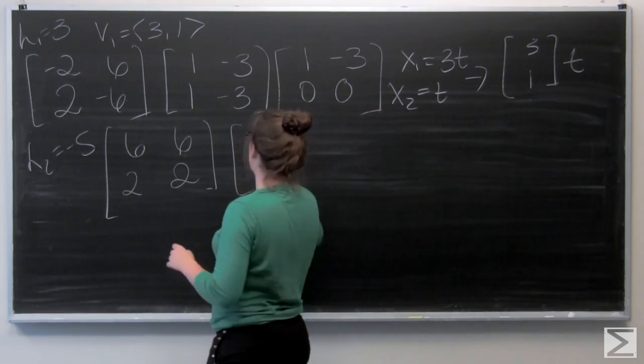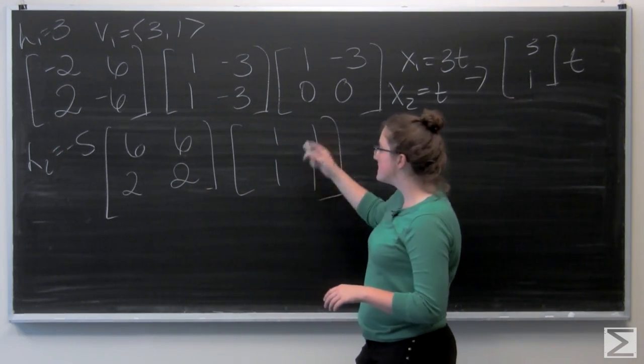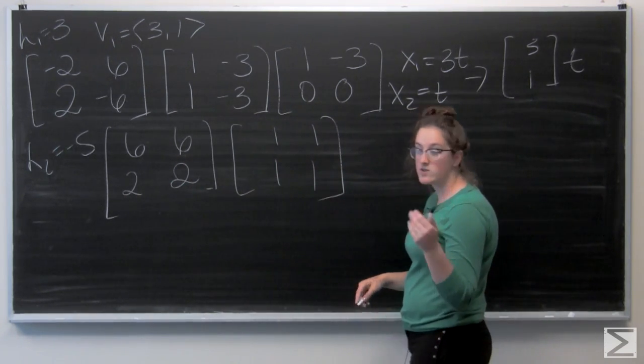Now I'm going to reduce the top row by 6, divide by 6 to get 1, 1. And the bottom row, divide by 2. Again, these rows are equal. Subtract the first row from the second.